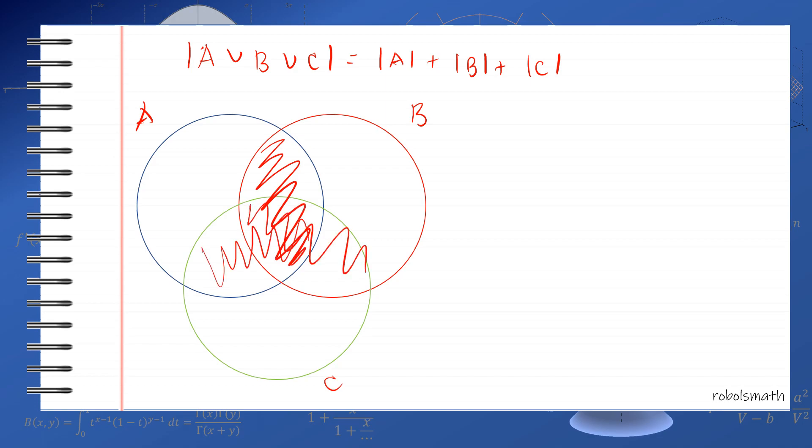So again, you minus the intersections. That's A intersection B, minus A intersection C, minus B intersection C. Are we done? No. Because when you do that, you double subtract this area.